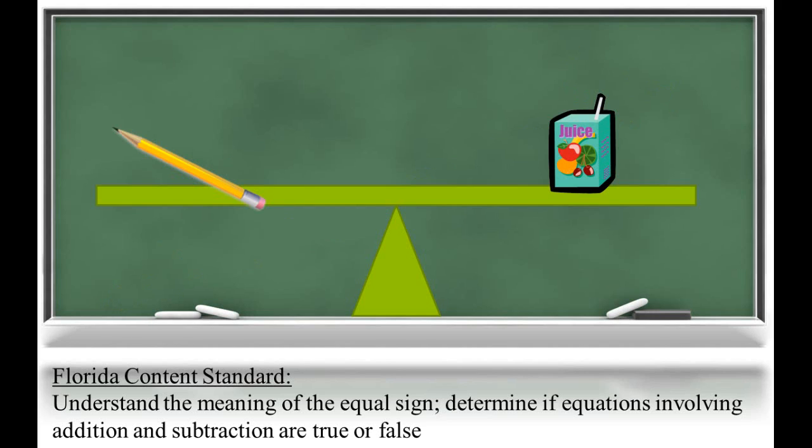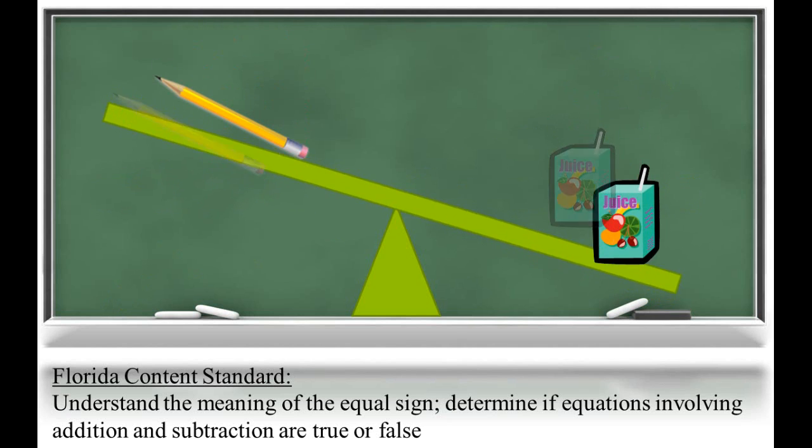Do you think the pencil and the juice box will be balanced? Since the juice box's weight has greater value than the pencil, the balance will tilt to the right showing an unequal amount of weight.